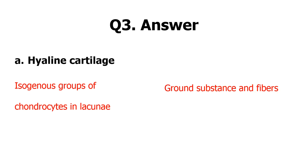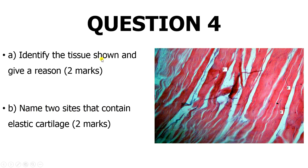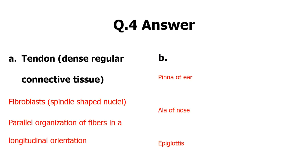Here you are told to identify the tissue and give a reason, and to name two sites that contain elastic cartilage. You can see the parallel organization of connective tissue fibers — this is collagen type one. These longitudinally arranged parallel collagen fibers represent tendinous fibers, so this is a tendon: dense regular connective tissue. The spindle-shaped nuclei visible here are nuclei of fibroblast cells. Two sites containing elastic cartilage are the pinna of the ear, the ala of the nose, and the epiglottis.